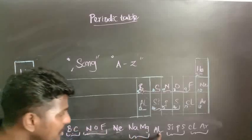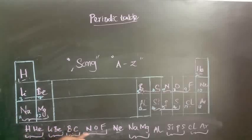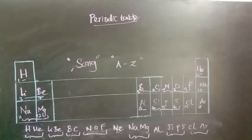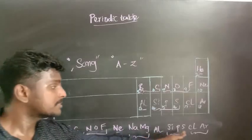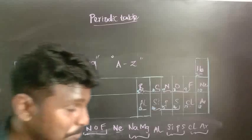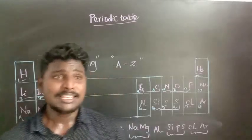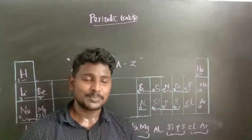Now shall we say it all together? Namaj, Al, Chips, Clear. Let's sing together now — Namaj, Al, Chips, Clear. I hope this method will help you to remember the first 18 elements of the periodic table. If you have any suggestions or comments, please put them in our comment box so we can improve ourselves. Your suggestions and comments are most valuable for us.